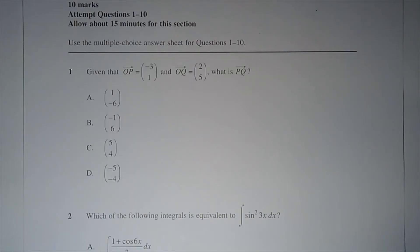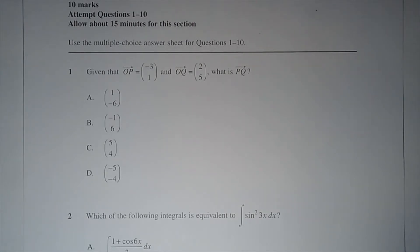Question 1. Given that vector OP equals negative 3, 1, and vector OQ equals 2, 5, what is vector PQ?